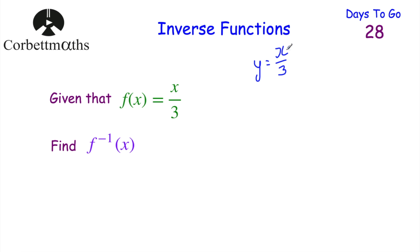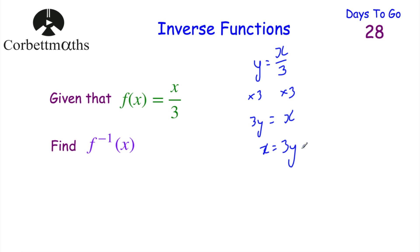At the minute y is the subject, so we rearrange to make x the subject. We multiply both sides by 3 to get rid of the divide by 3, giving 3y = x. Turning that around: x = 3y. So the inverse function of x is f⁻¹(x) = 3x.